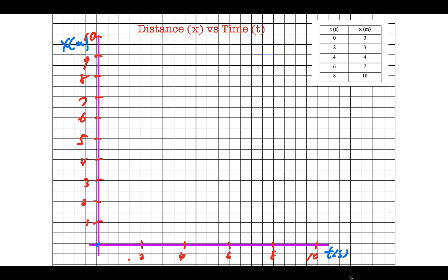So, first one, 0, 0. Second one is over 2 and up to 3. Over 4 and up to 4. Over 6 and up to 7. And over 8 and up to 10.